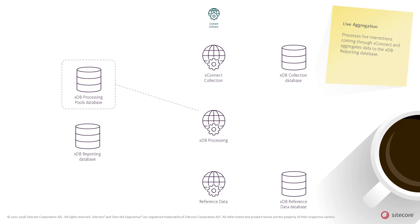The XDB Processing Application role continuously pulls the XDB Processing Pools database and will pull the recently added aggregation task and start the aggregation process. During the processing, the XDB Processing role will pull the new interaction from the XConnect collection service and can pull additional data needed in the aggregation from other sources, for example the reference data service.